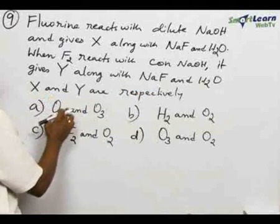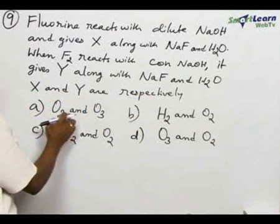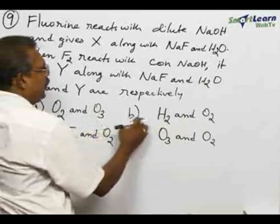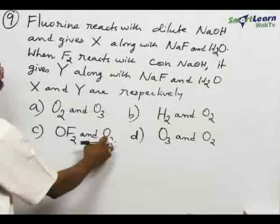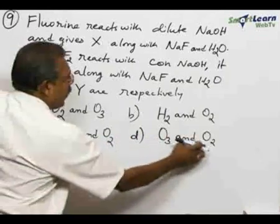We have to identify X and Y. The options are: A) O2 and O3, B) H2 and O2, C) OF2 and O2, and D) O3 and O2.